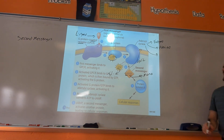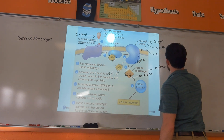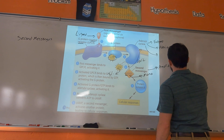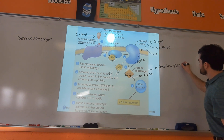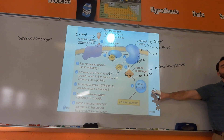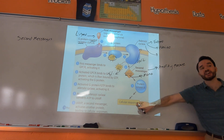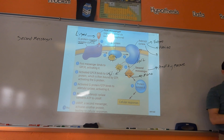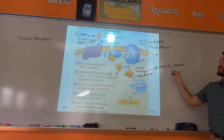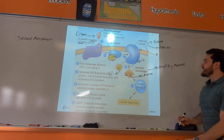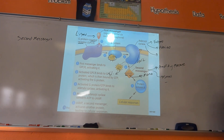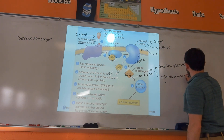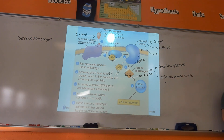Second messengers amplify our signals — they're very similar to our signal transduction cascades. They amplify the message. These second messengers are very small molecules. They're also water-soluble. Why is it beneficial that second messengers are small? They're a second messenger — they need to move, they've got to get around stuff in the cytoplasm. Being small makes them nimble and quick; they diffuse easily.